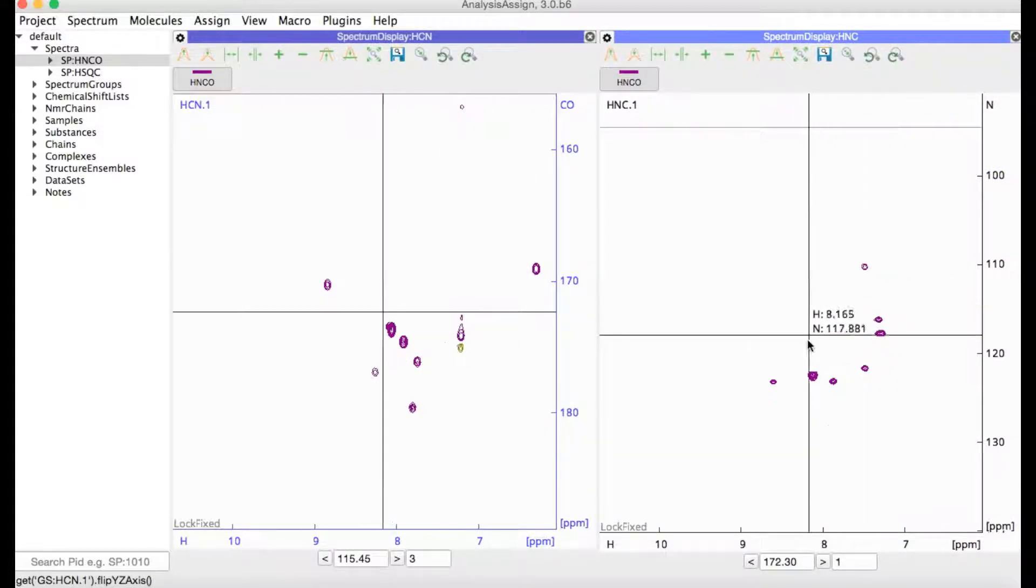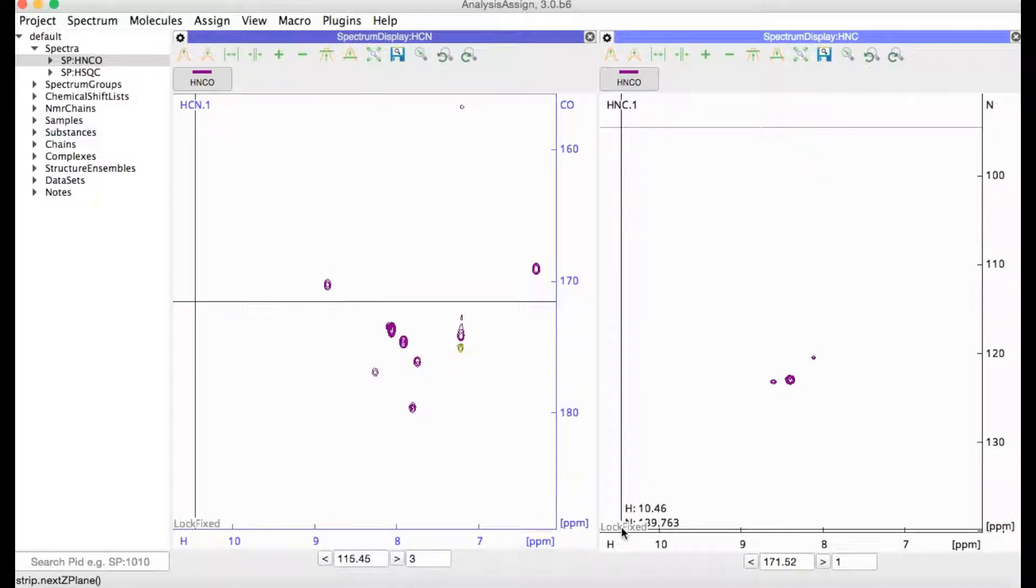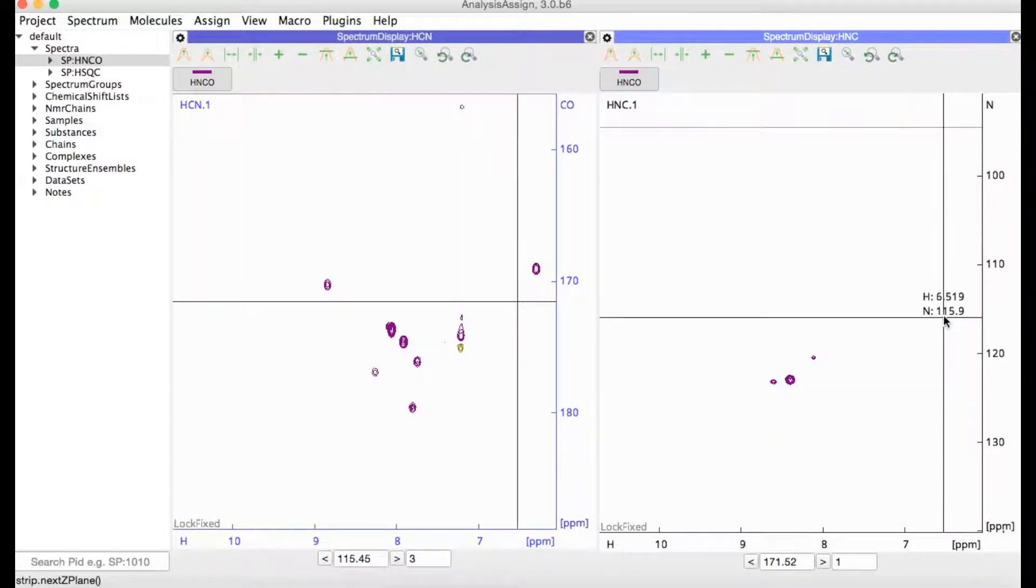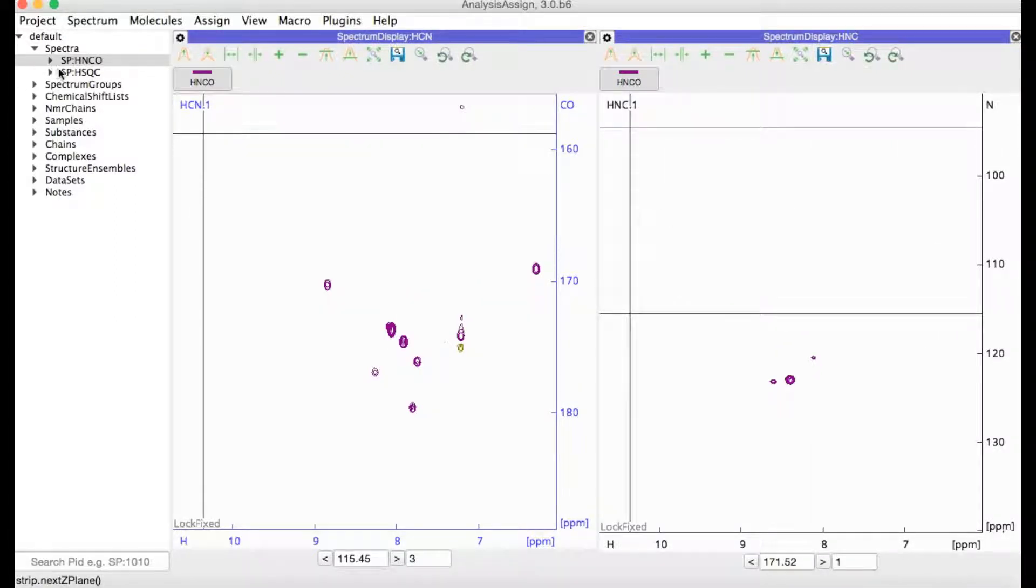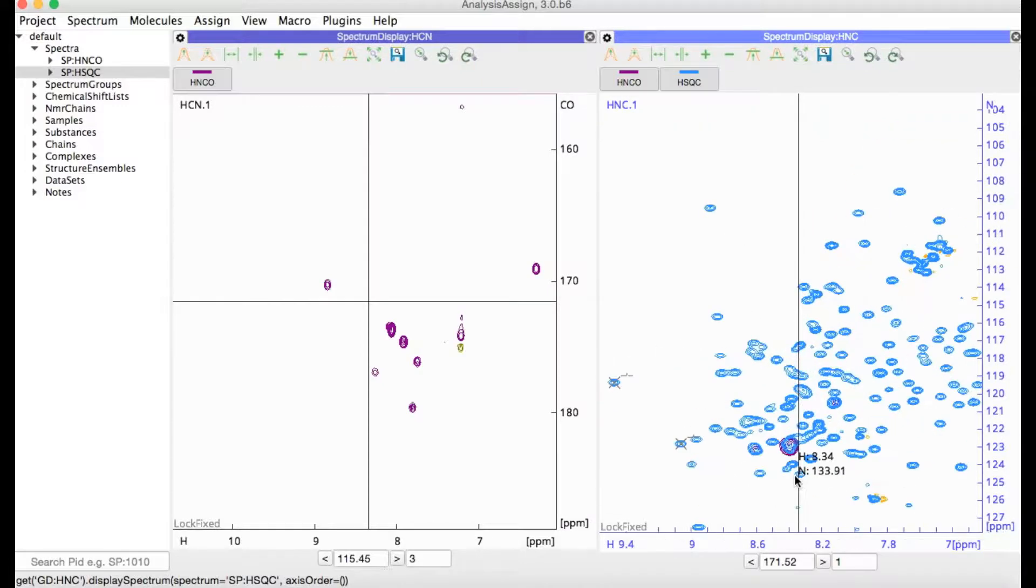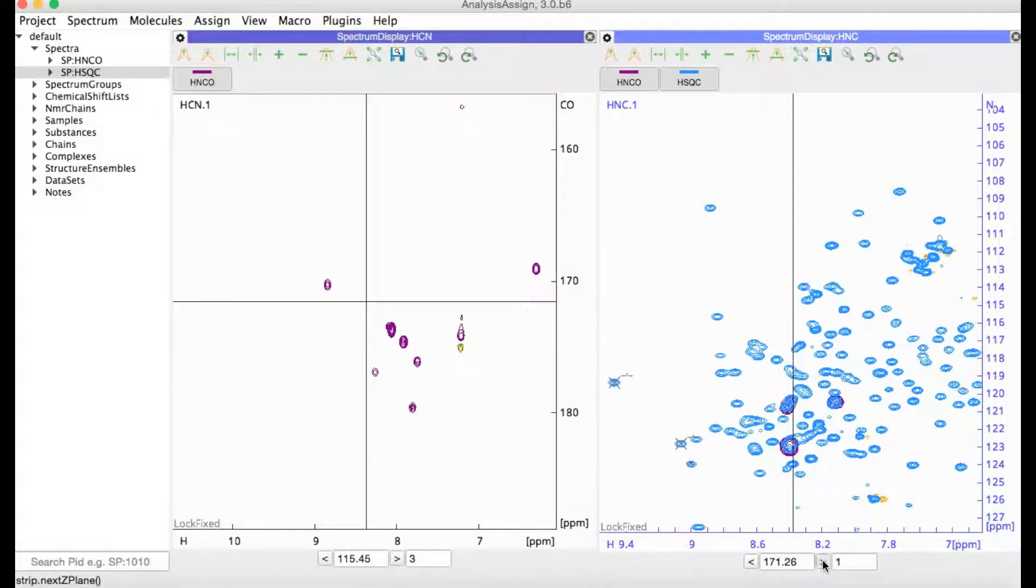In this window, I can now see the spectrum the other way around. Of course, with protons along x and nitrogen along y, I can also overlay this with my HSQC spectrum. Now I can look at both spectra together and see how well they overlay.